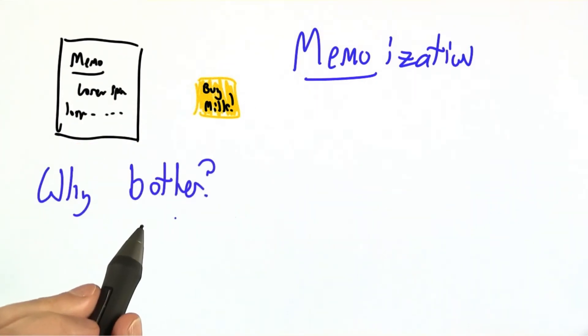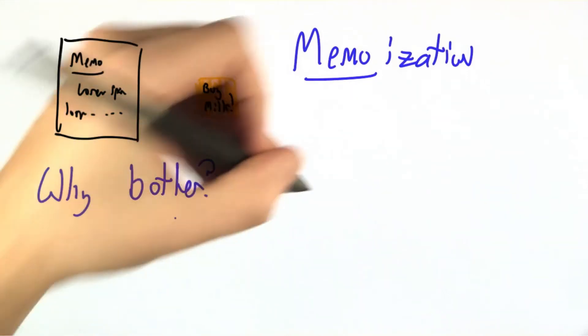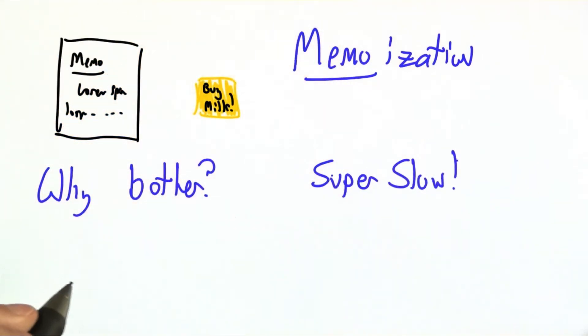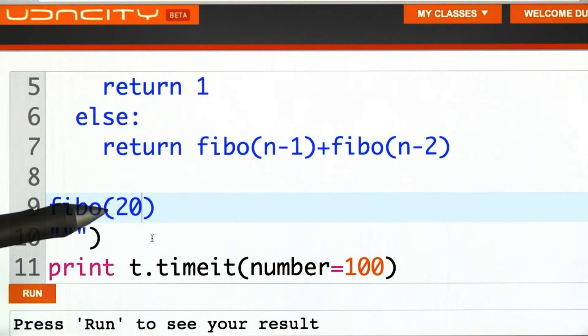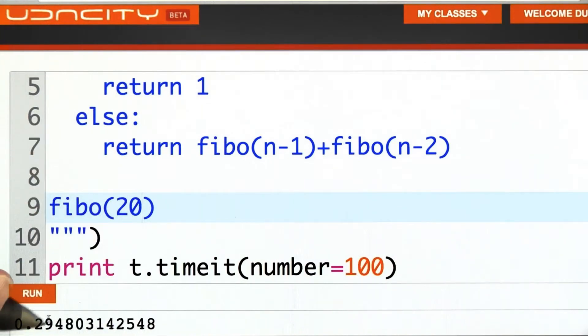Why bother with this? Well, it's going to turn out that our current implementation of Fibonacci is super slow. Let me try to prove that to you. So let's see how long it takes to do 100 trials of the 20th Fibonacci number, about 0.3 seconds.